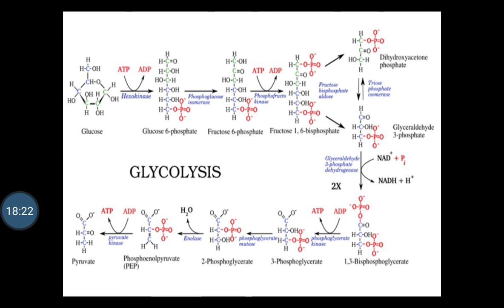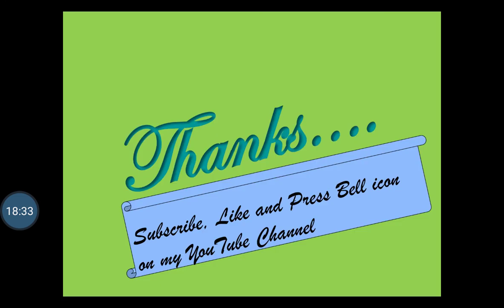The starting material is glucose and the end product is pyruvate. The pyruvate which is formed gives rise to acetyl coenzyme A and enters into the TCA cycle. Thank you very much.